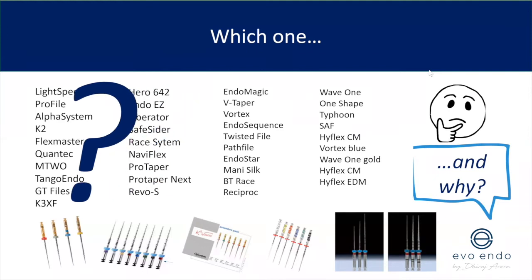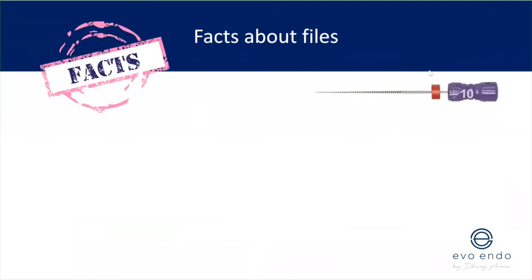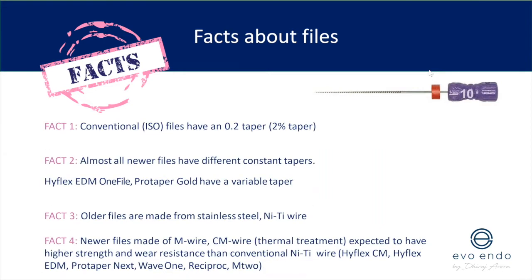Before I answer that, let me run through some facts about files. I'll only give you my opinion. As an endodontist I use more than one file system — there are many ways of doing root canal treatment and there's no one perfect file system, but you want to know what you're using, its properties, and in which scenario it works best. Fact number one: conventional files have a 0.02 taper — a two percent taper.